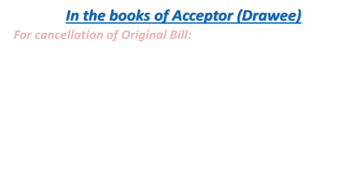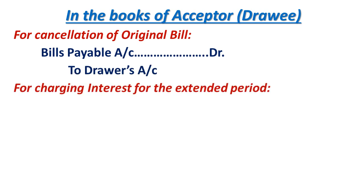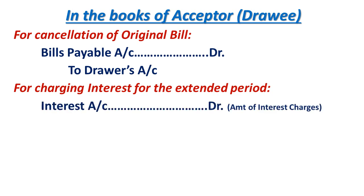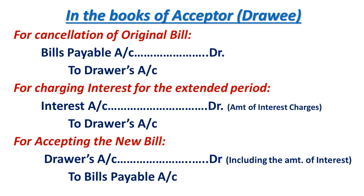Next, the general entries in the books of drawee, that is the acceptor. The cancellation entry remains same as the dishonor entry — in the books of the drawee, Bills Payable Account will be debited and Drawer's Account will be credited. For charging interest, it is an expenditure for the acceptor, so: Interest Account debit to Drawer's Account. Then for making a new bill: Drawer's Account debit to Bills Payable Account, including the amount of interest.